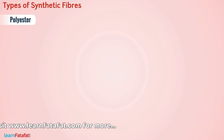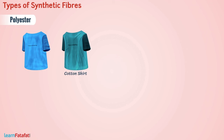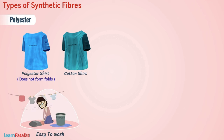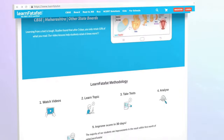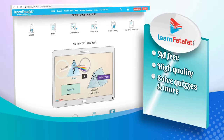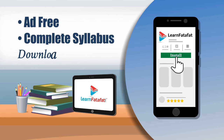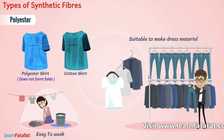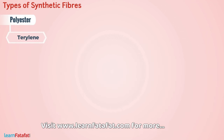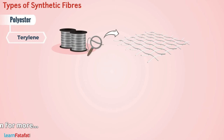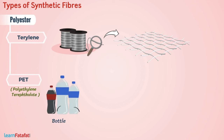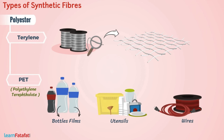Another synthetic fiber is polyester. Unlike cotton cloths, fabric made from polyester does not form folds; instead, it remains clean and fresh. It is easy to wash such clothes. Therefore, polyester is suitable to make dress material. One of the popular polyester fibers is terrylene, which is very fine and can be woven like any other yarn. PET is a form of polyester used to make bottles, films, utensils, wires, and other useful products.